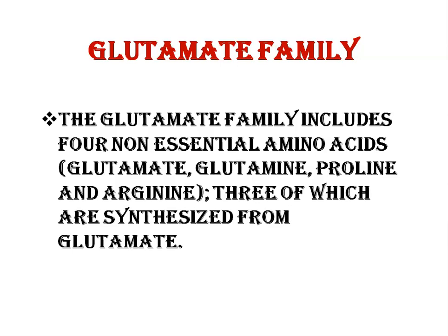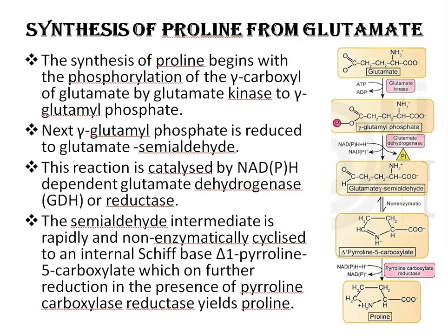The glutamate family includes four non-essential amino acids: glutamate, glutamine, proline, and arginine — three of which are synthesized from glutamate. We will start with the synthesis of proline from glutamate.